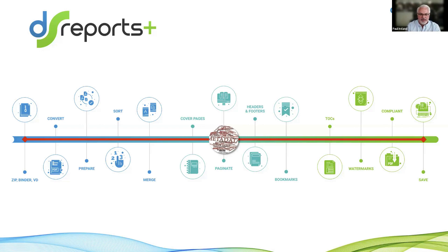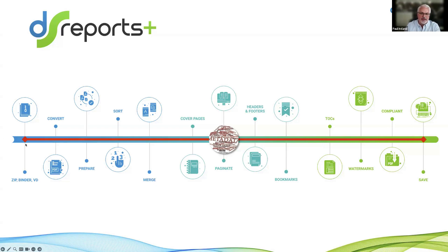We sort them in the right order, merge them together, add cover pages at the beginning of the entire report — or if it's multiple volumes, ensure each volume has a cover page. We paginate the entire report, apply headers, footers, bookmarks, tables of contents, and watermarks if needed. Then we ensure the final results are fully compliant with health authority requirements depending on where you're sharing the content, and the results are stored back into Vault — everything here is automatic apart from the creation of the binder upfront.